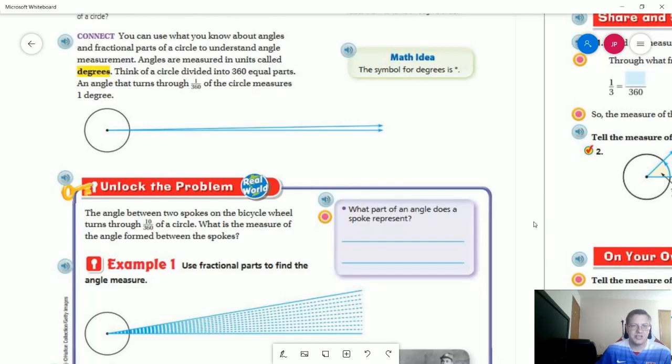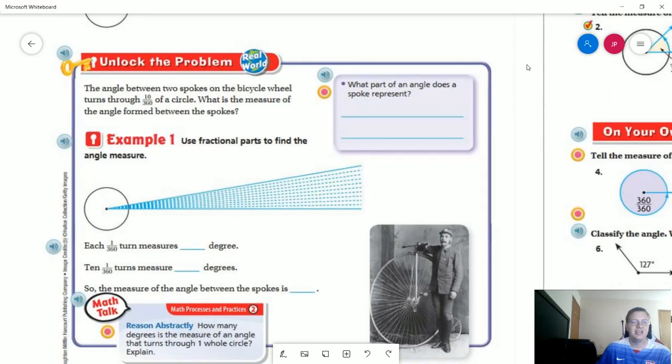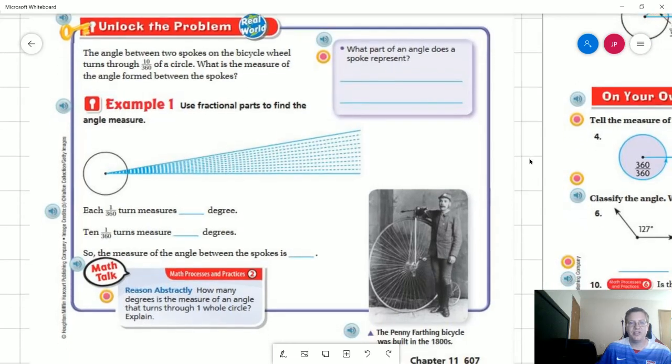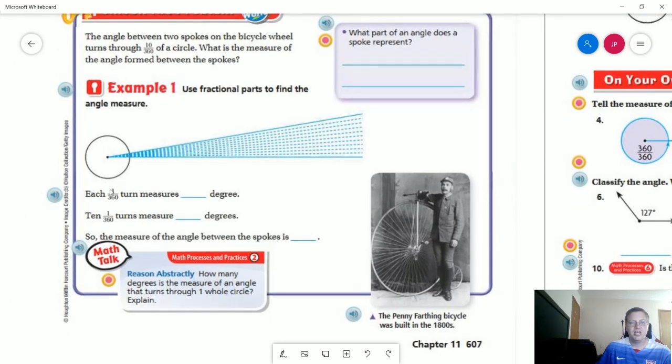One degree is going to be 1/360th of the entire circle. And so 90 degrees would be 90 parts over 360. 180 would be 180 over 360 and that would give us a straight line that would look like this, assuming that my fingers and everything were aligned perfectly evenly. So as we go down here, what we're going to start with is figure out if we do 1/360th, that would be 1 degree.